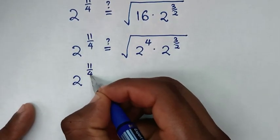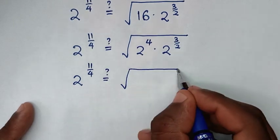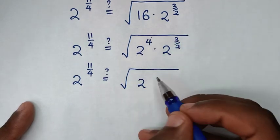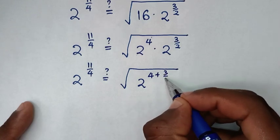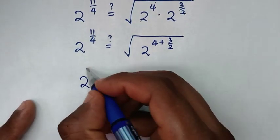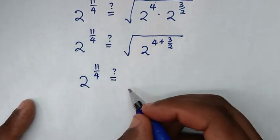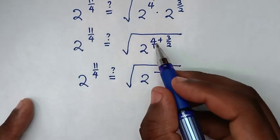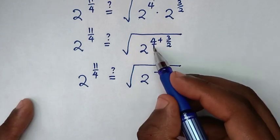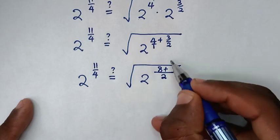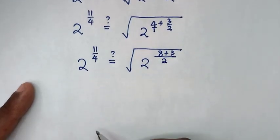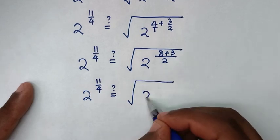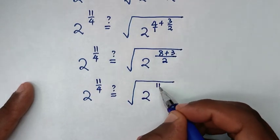So we have 2 power of 11 over 4, and we need to check it equals the square root of 2 power of 4 times 2 power of 3 over 2. Using multiplication of exponents with the same base of 2, we add the powers. The LCM is 2: 4 over 1 becomes 8 over 2, plus 3 over 2 equals 11 over 2. So it equals the square root of 2 power of 11 over 2.